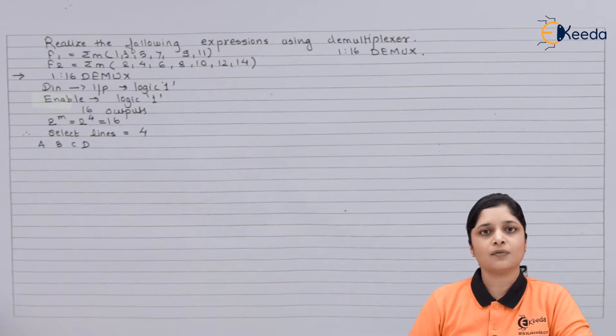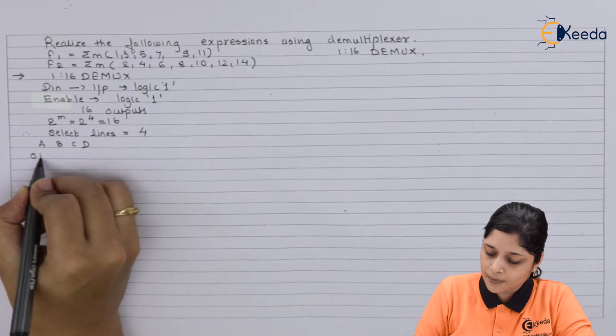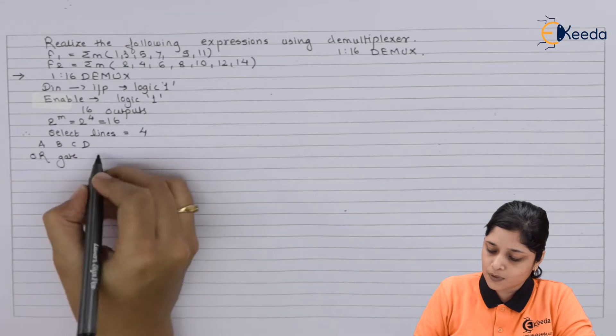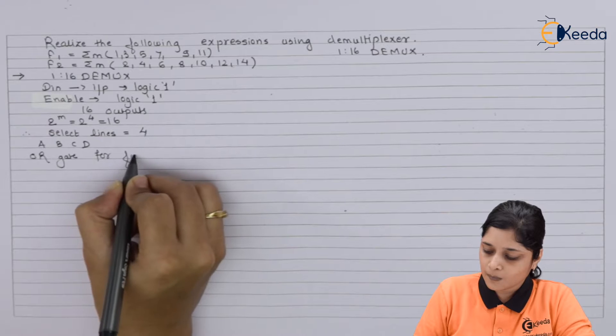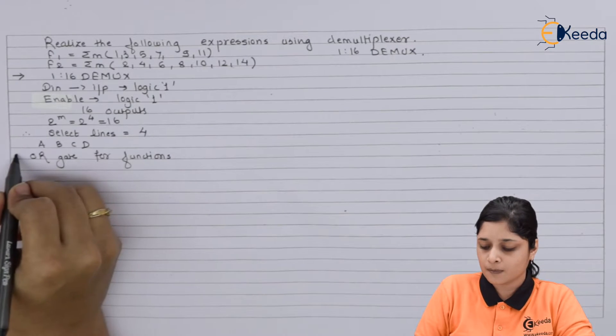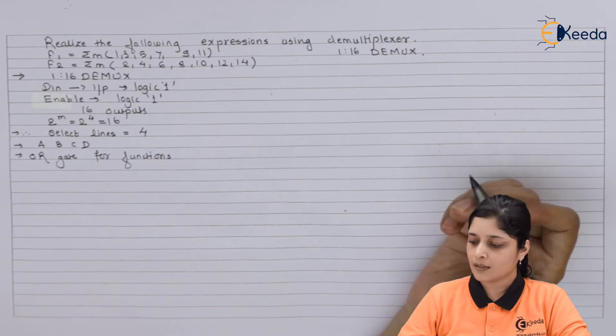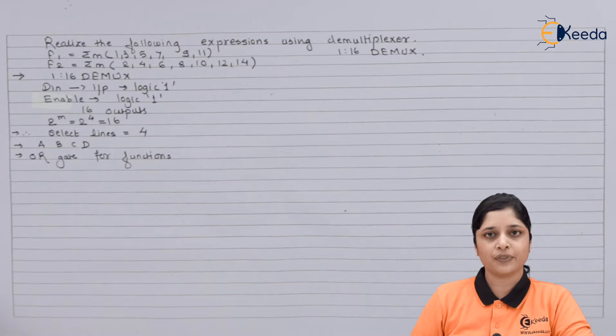According to the minterms present in function f1 and f2, you have to use here the OR gate separately for outputs. OR gates for the given functions - these are all the logical OR gates.